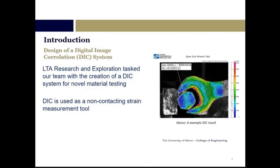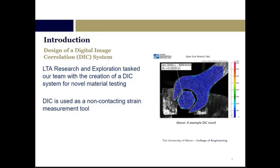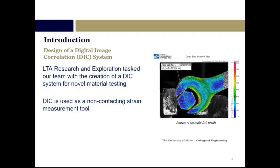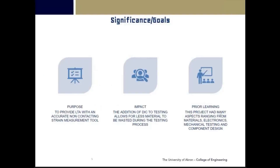LTA Research and Exploration tasked our team with the creation of a system for novel material testing. What it's used for is non-contacting strain measurement, as you can see in that animation on the right-hand side. The purpose of this project is to provide LTA with an accurate non-contacting strain measurement tool. Compared to traditional methods, it can be used with less material waste at a cheaper cost. This is a multi-faceted project spanning materials, electronics,